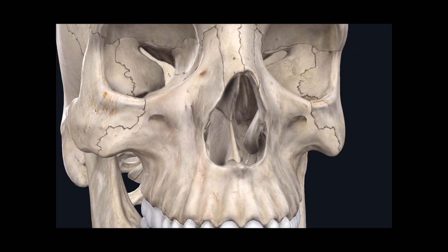The first facial bone we're going to discuss is the inferior nasal concha, located right here — and there's one on this side as well. This pair of bones is located within the nasal cavity. Also found in the nasal cavity is the vomer. The vomer is a bone that's not paired and again it's found in the nasal cavity.